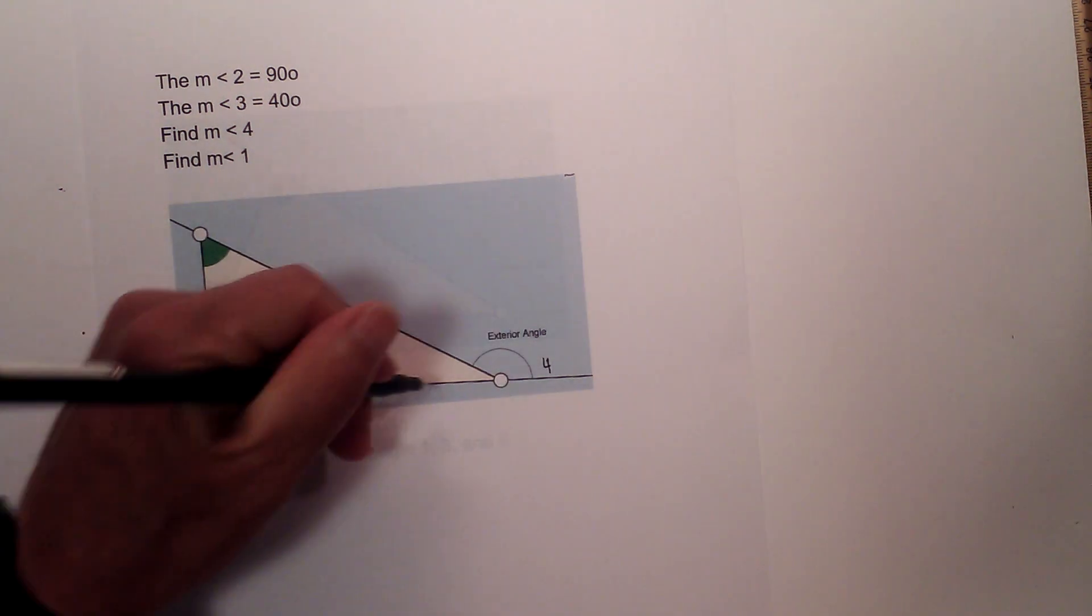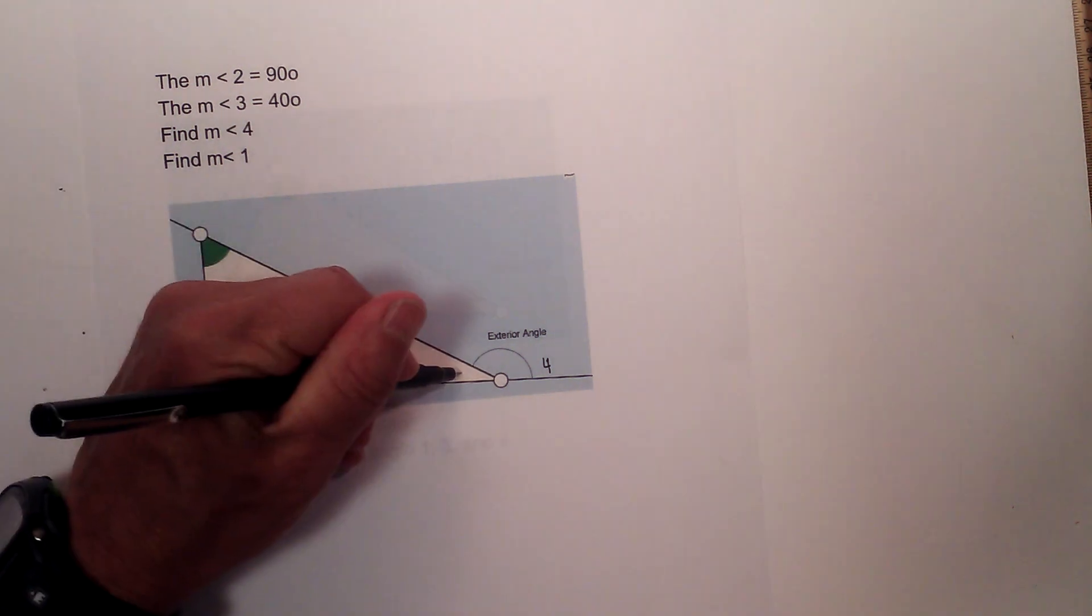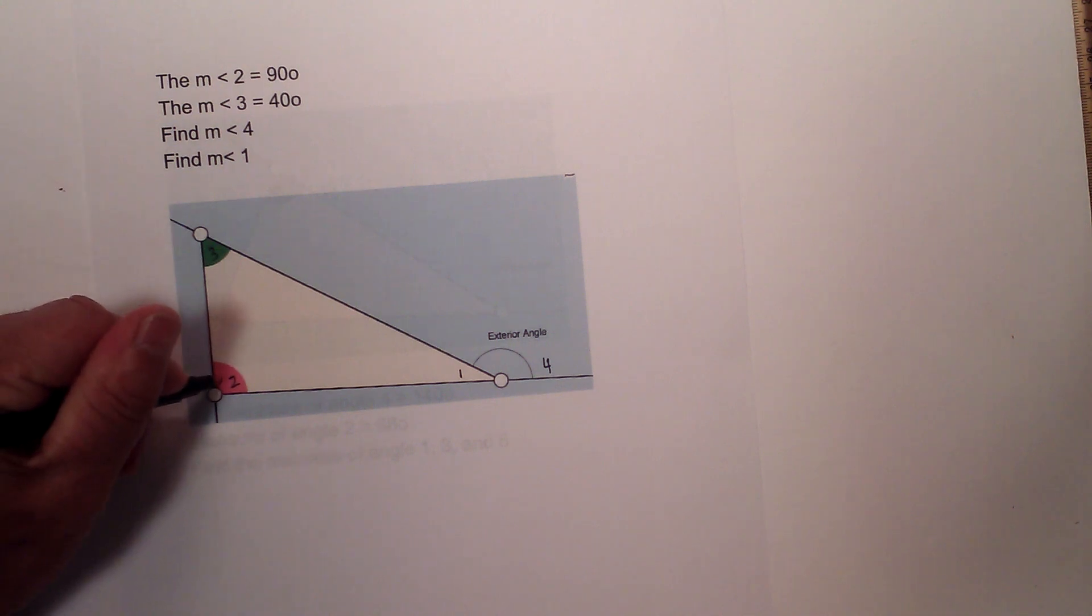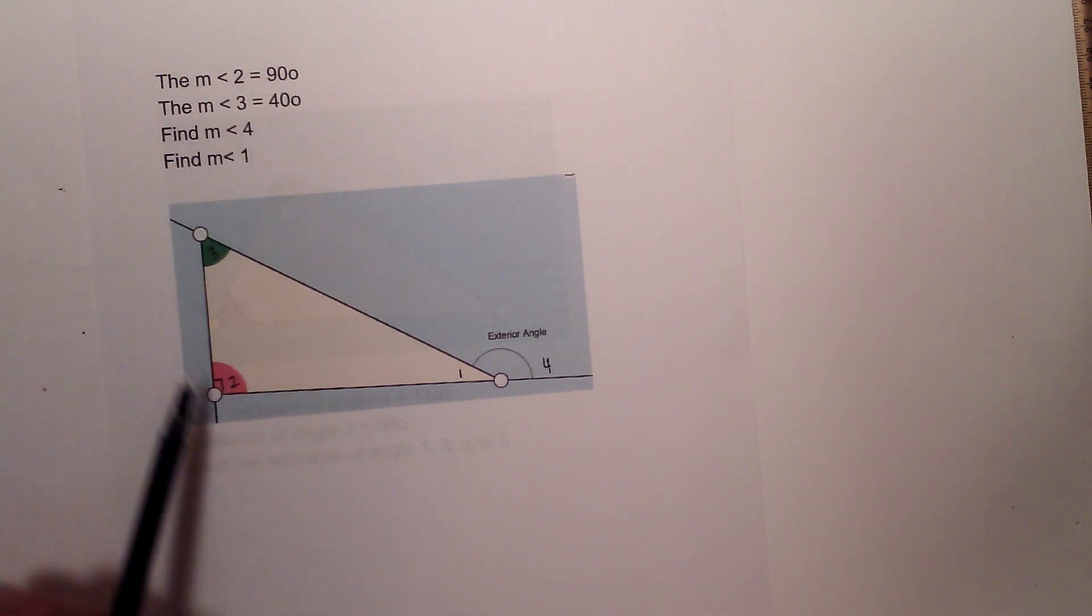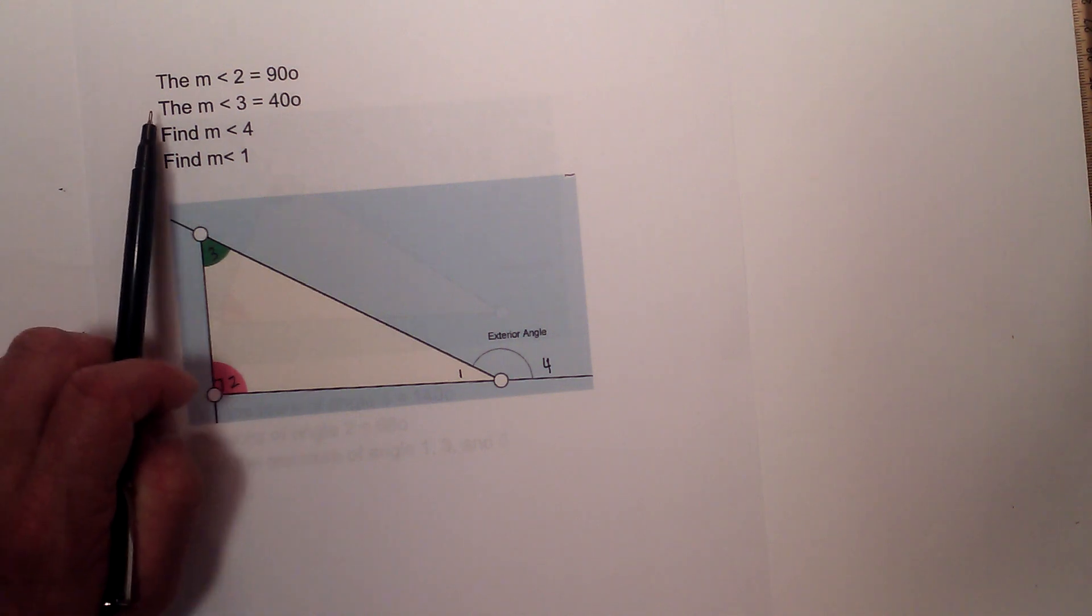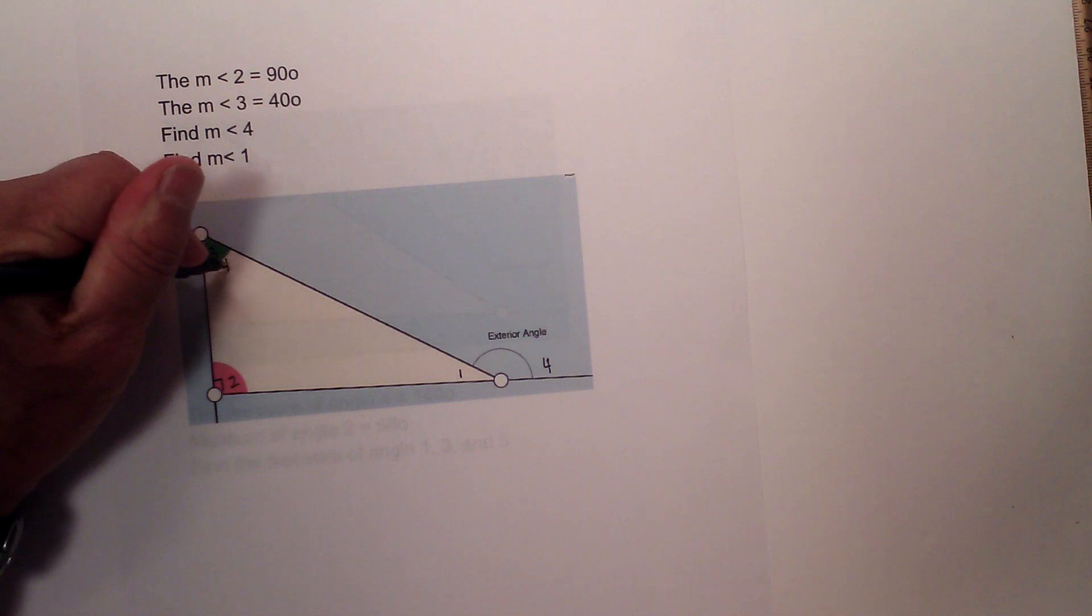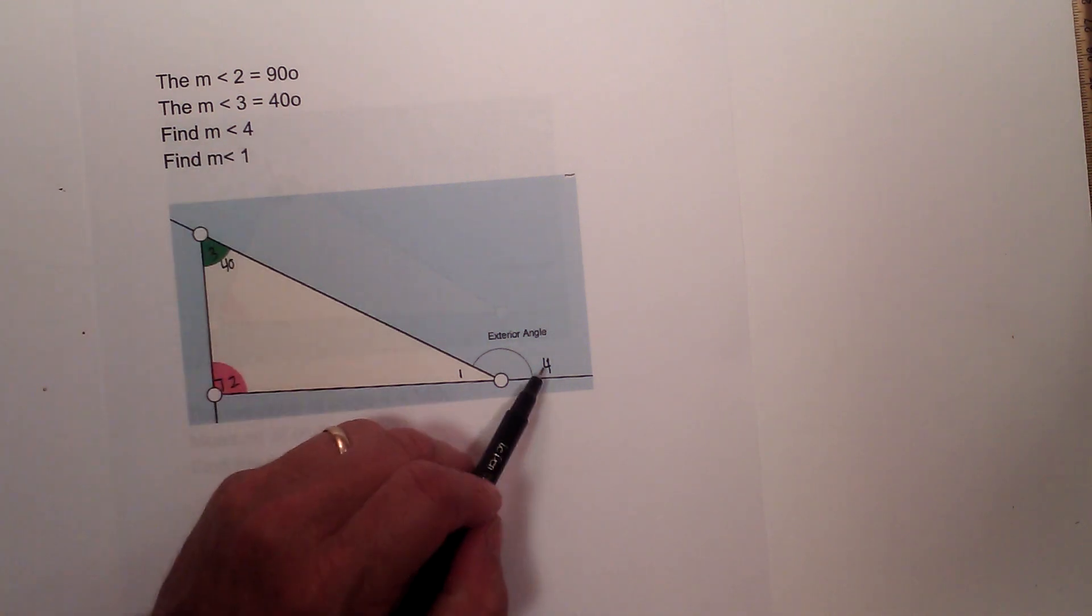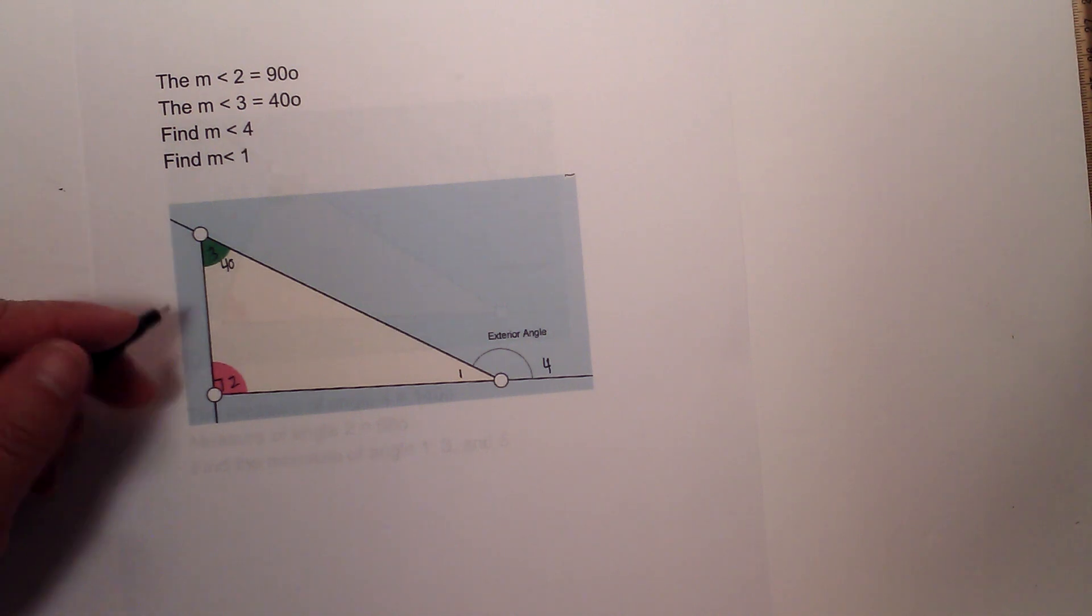Let's number these. Here is 1, this is 4, angle 1, this is 1, 2, 3. The measure of angle 2 is 90 degrees, and you can see the box there. The measure of angle 3 is 40 degrees. What is the measure of angle 4?